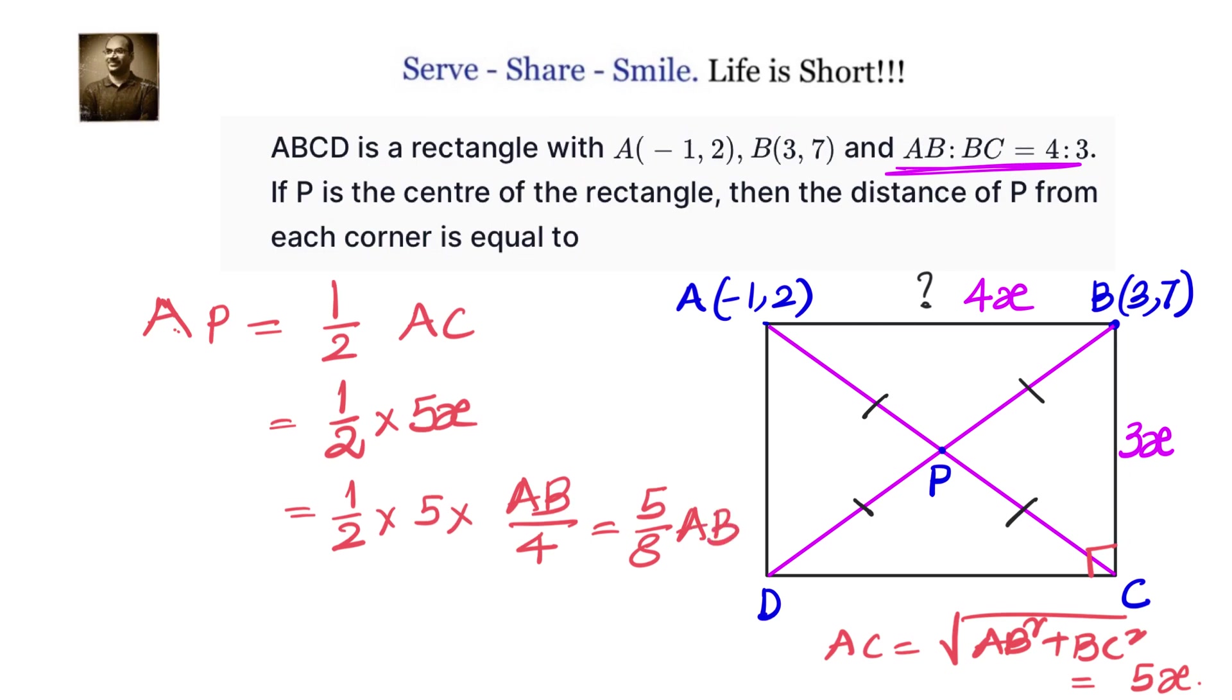Now the problem is pretty simple because you can easily calculate the distance of AB by using distance formula. So let us calculate the distance between A and B. Then we can come back and multiply that with 5 by 8 to give the value of AP.